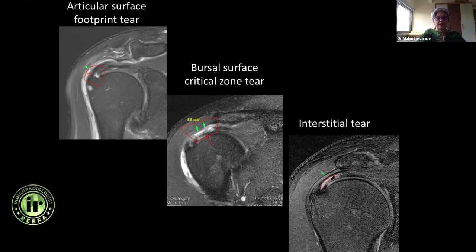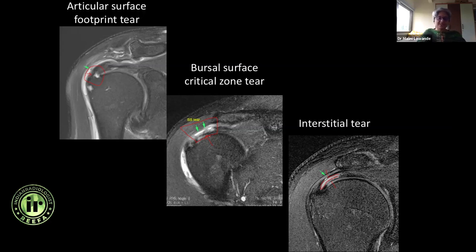Sometimes you can have interstitial tears where the tear is entirely within the substance of the tendon — articular and bursal surface fibers are intact. The surgeon cannot see it arthroscopically, and an arthrogram would not show contrast going in there. Again, state how much thickness is involved — this is more than 50 percent thickness of the tendon. Most partial thickness tears are managed conservatively to begin with, but when more than 50 percent thickness and the patient is not responding, surgical planning may follow.